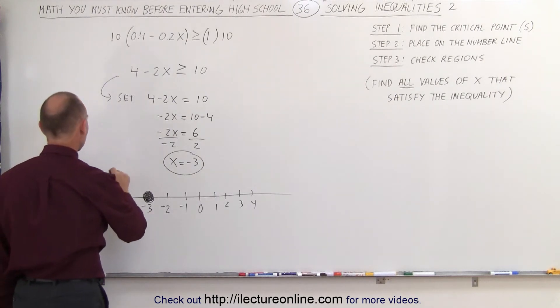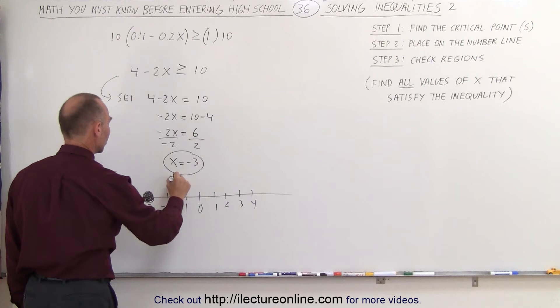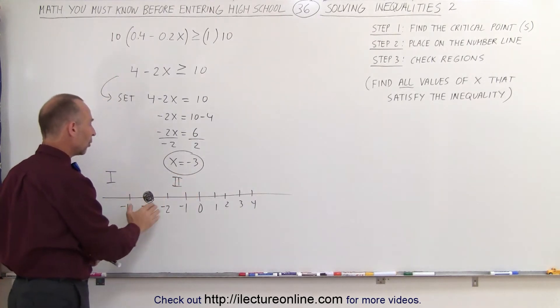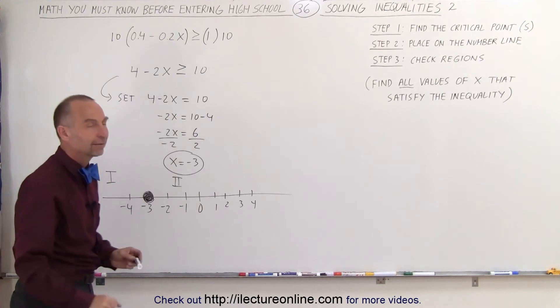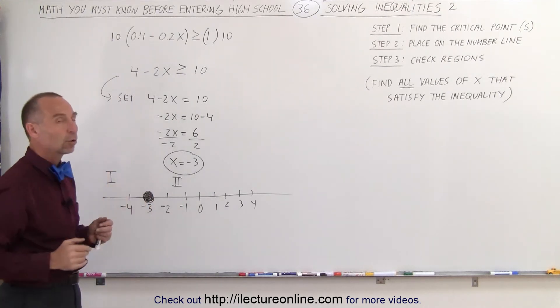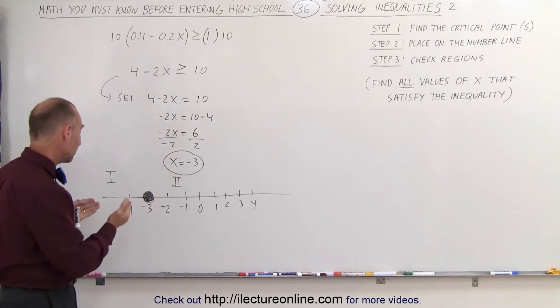Now, that critical point still divides the number line into two regions, number 1 and number 2. Number 1 is the region to the left of that point. Number 2 is the region to the right. We need to check to see which of the two regions satisfies that inequality. To do that, we just simply pick a point.